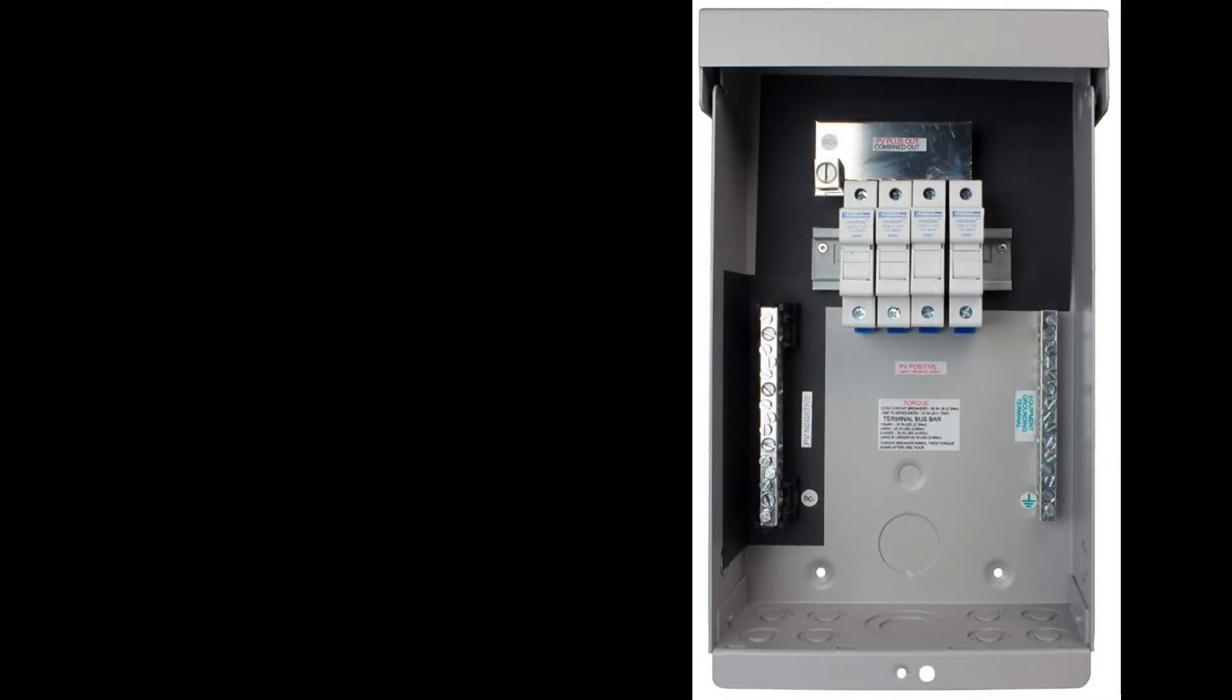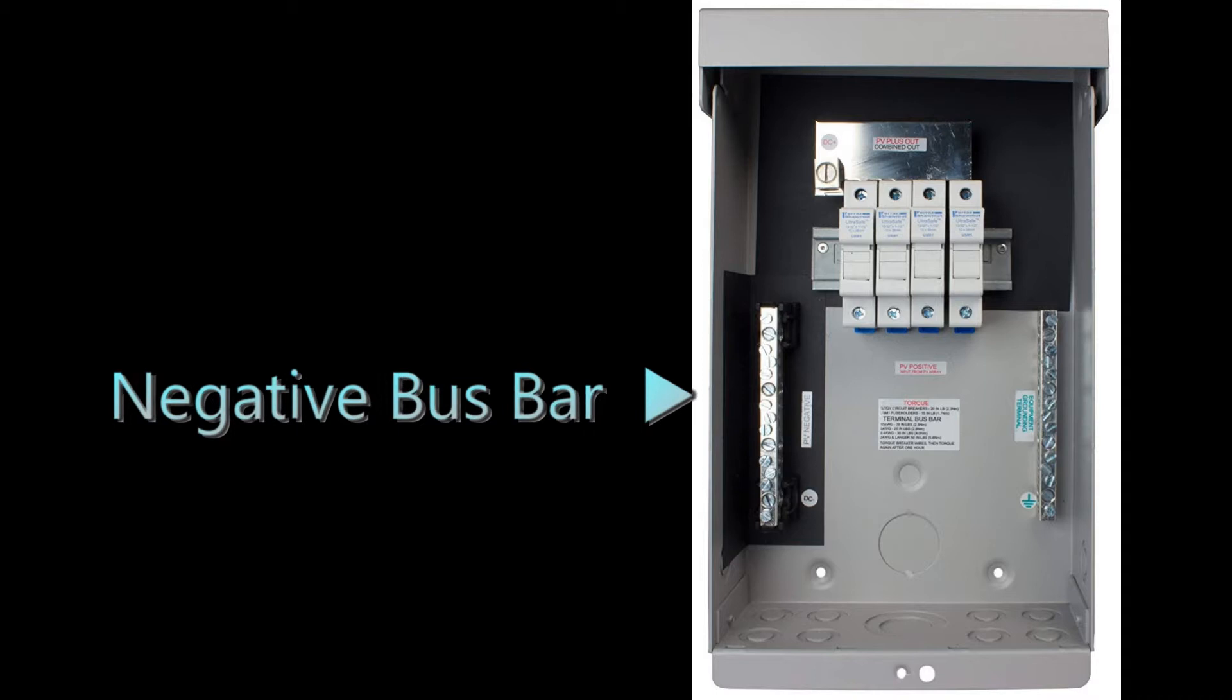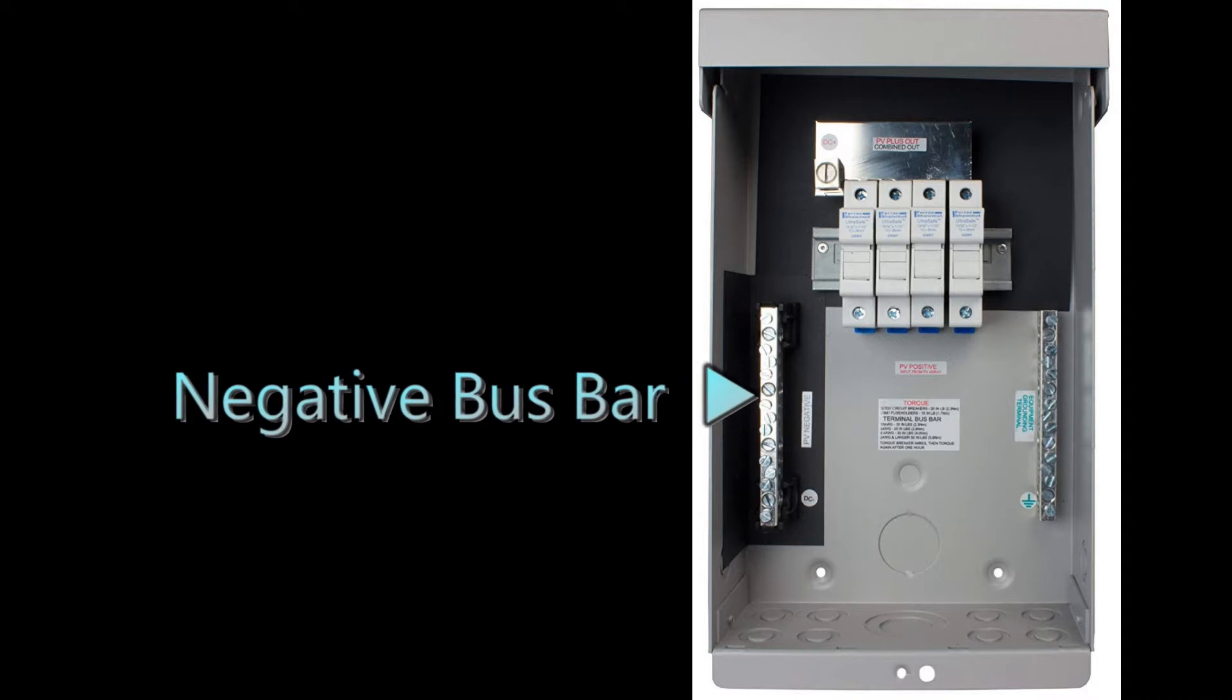Let's talk a little bit about the parts of a Midnight Solar Combiner Box. This photo here is of an empty example. On the left there is a negative bus bar. That's where you'll make all of your negative string connections as well as the PV output connection that will go then to your DC disconnect.